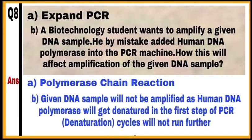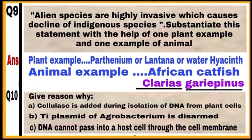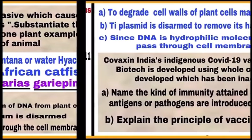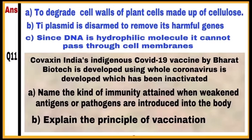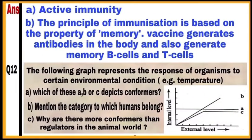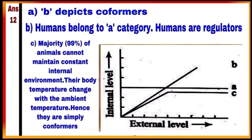Question number 8 is based on polymerase chain reaction. Question numbers 9 and 10 are also covered here. Question number 11 is based on co-vaccine and vaccination. Go through all graphs from chapters 13 and 15 — there are three graphs in these two chapters.